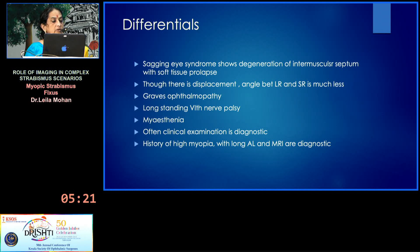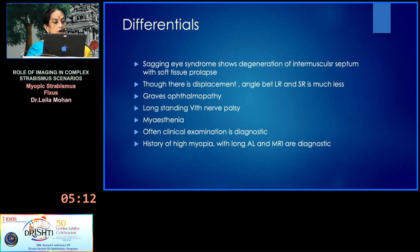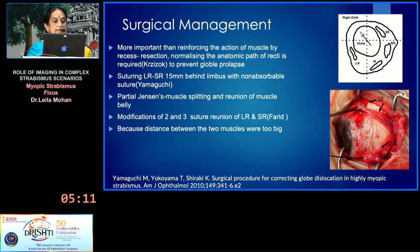Myasthenia, when long-standing and untreated, can occasionally be confused with this condition. Often clinical examination is diagnostic, and history of high myopia with a long axial length and MRI are diagnostic.